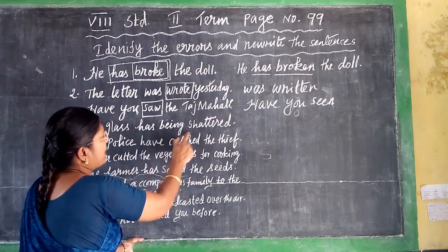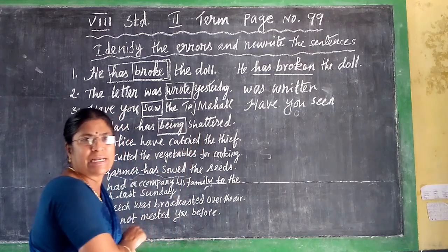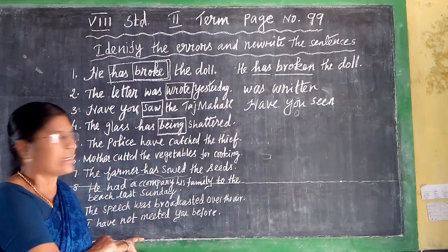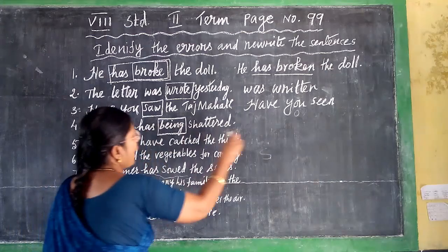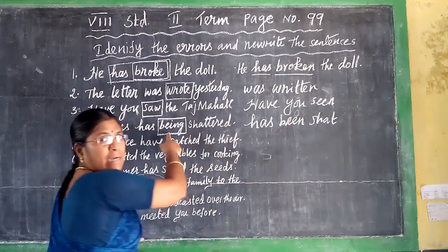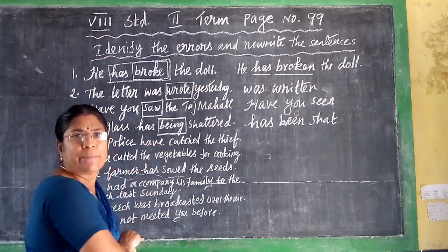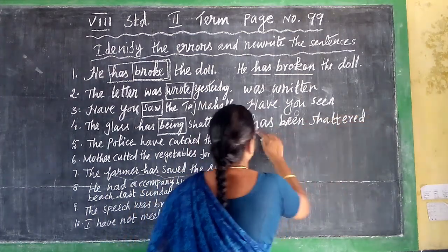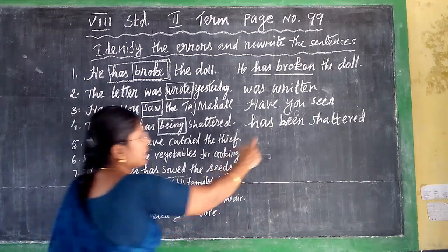Next sentence uses 'has being chattered.' Here, 'being' is wrong because 'being' is used only for continuous tense, but this sentence is in present perfect tense. So you have to use: have or has + been + 3rd form of the verb. Since 'glass' is singular, we use 'has.' The correct form is: 'has been chattered.'